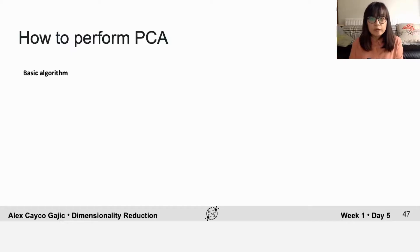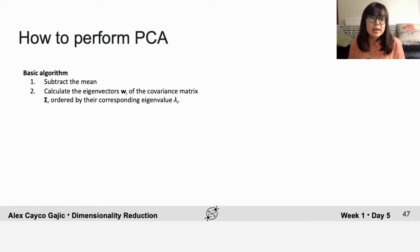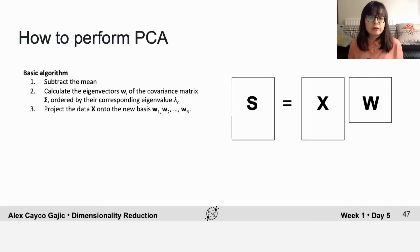So how do we actually perform PCA? Here's the basic algorithm. The first step is to subtract the mean—for each neuron, for example, subtract its average firing rate across all samples. This is very important for making it easier to calculate the covariance matrix. I would say around 80% of PCA problems are an issue with mean subtraction. The second step is to calculate the eigenvectors of the covariance matrix of the data and order them by their corresponding eigenvalue, which again is the projected variance. The final step is to project the data onto the new basis. Since the new basis is orthonormal, we can just do this with matrix multiplication.